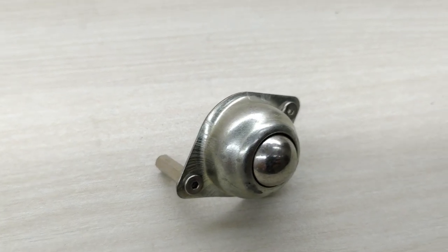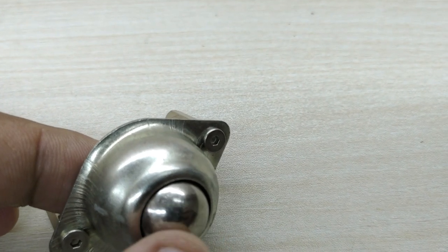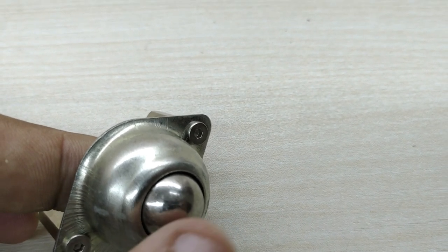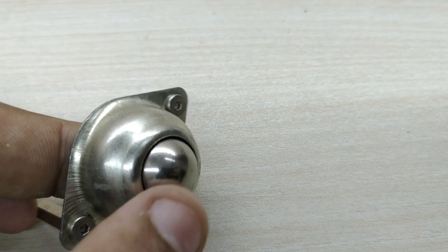The caster wheel has a ball inside it which can roll in any direction. Now, let us learn how to make this edge detecting robot.